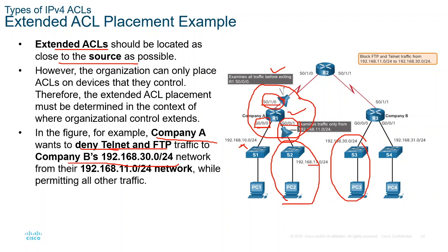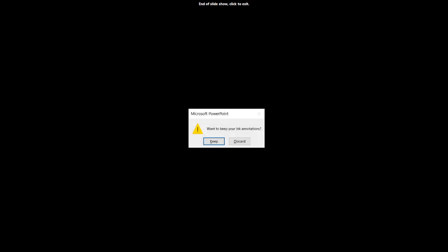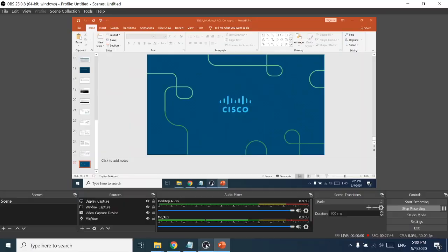If you implement on G0/0/1, it will only filter traffic from 11.0. If you apply on the Serial interface, it filters both 10.0 and 11.0 — which is two traffic streams, reducing performance slightly. So applying on G0/0/1 inbound is the best option, as it only involves the 11.0 network. That's all for this session. Thank you.